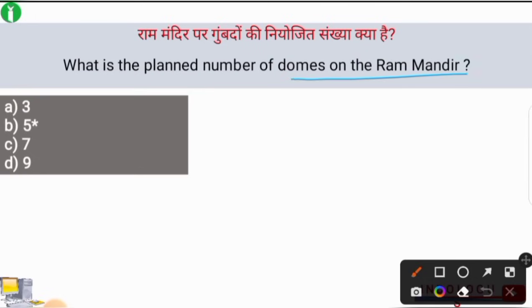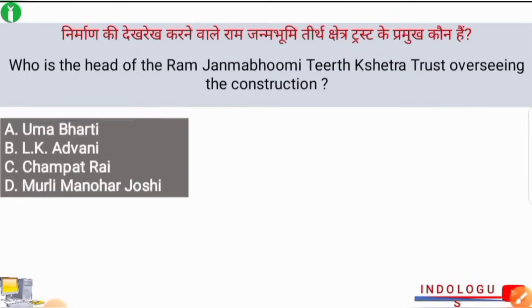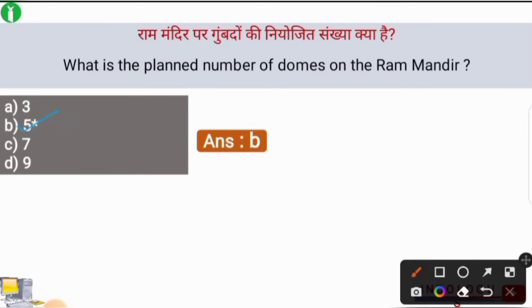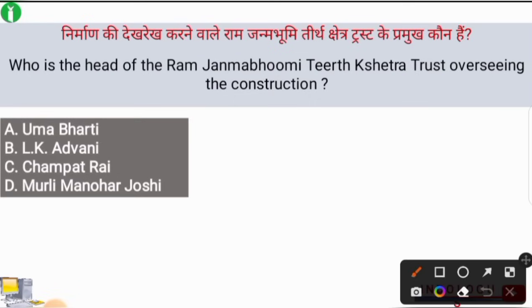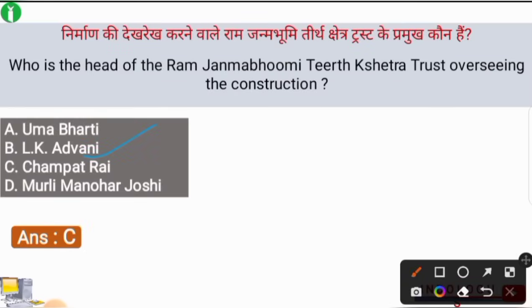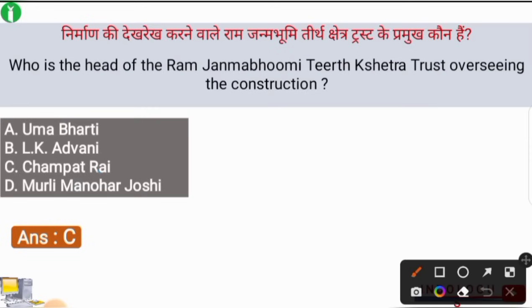What is the planned number of domes on the Ram Mandir? The correct answer is option number B. Who is the head of the Ram Janmabhumi Tirth Chhetra Trust overseeing the construction? The correct answer is option number C, i.e. Champat Rai. Champat Rai was the head of the Ram Janmabhumi Tirth Chhetra Trust overseeing the construction. You have to keep this in mind.